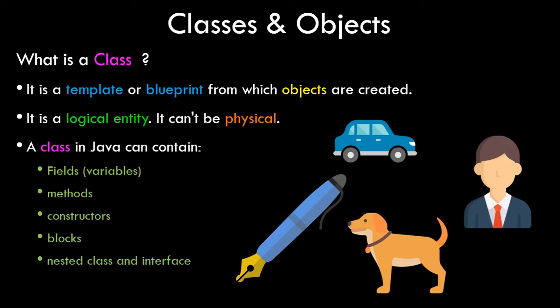So what does a class contain in Java? Basically a class has fields like variables, then it has methods — methods are nothing but functions and they are called methods in Java. It has constructors, which we will see in further tutorials. It also has other blocks, nested classes, and interfaces. Right now we'll just take a basic look at the programming part.